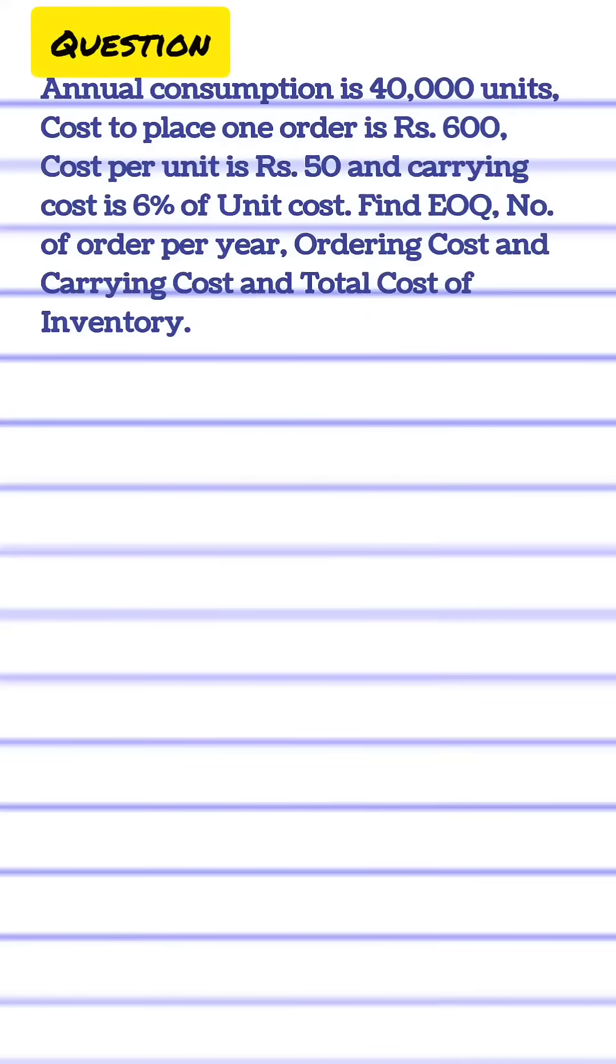In the above question, annual demand is 40,000 units. Cost per order is 600 rupees, cost per unit is 50 rupees, while holding cost is 6% of unit cost.